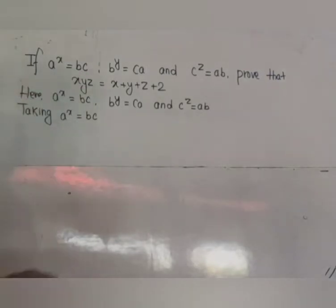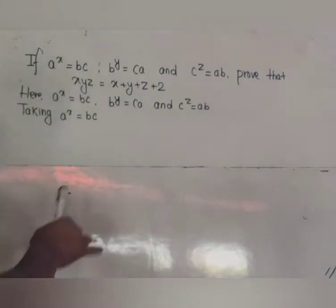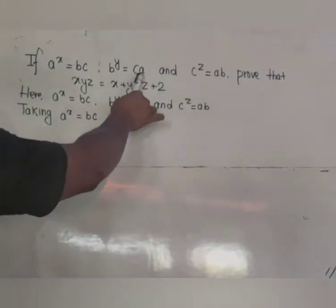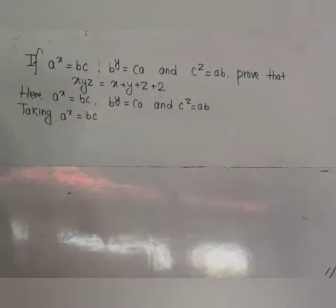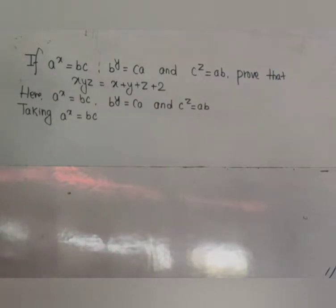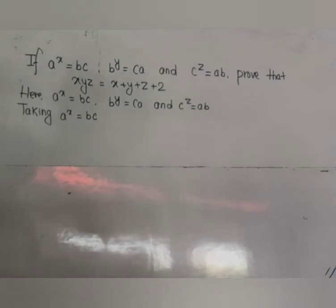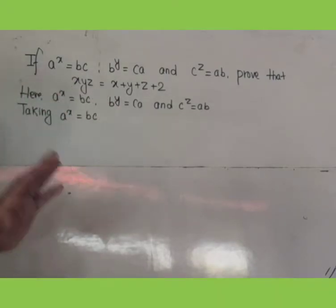We have been given that a^x = bc, b^y = ca, and c^z = ab. Given these conditions, we have to prove that xyz = x + y + z + 2.